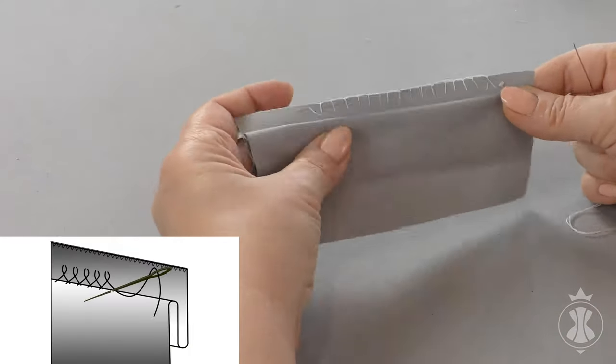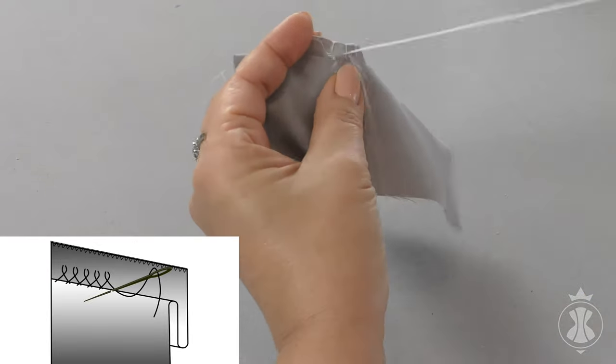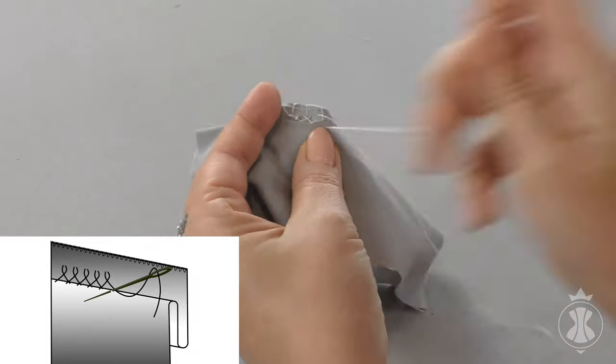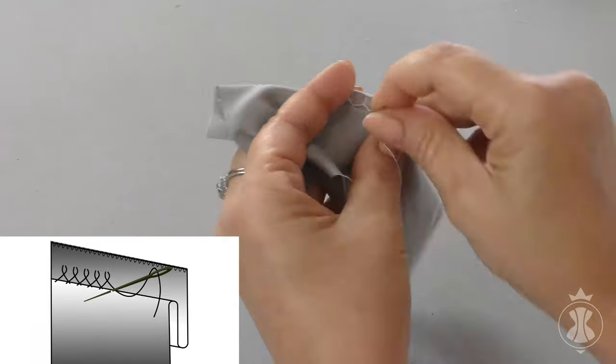Blind Catch Stitch does not show on the right or wrong side as the stitches are hidden inside the fold of the hem. Fold the garment back from the seam allowance and do a cross-shaped catch stitch.